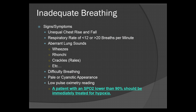Inadequate breathing signs and symptoms: you'll see an unequal chest rise and fall or very minimal chest rise and fall. Your respiratory rate will be less than 12 or greater than 20 breaths per minute. You'll have some aberrant lung sounds — these include wheezes, ronchi, crackles, otherwise known as rales, etc. The patient will have noticeable difficulty breathing. They will be pale or cyanotic in appearance. Usually cyanosis begins around the lips and the nail beds and progresses further. If anything beyond this is noticed, your patient is in very, very serious danger.